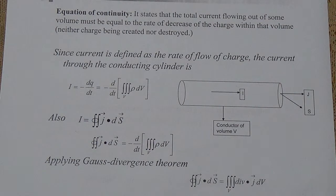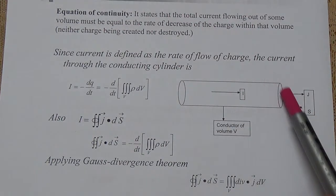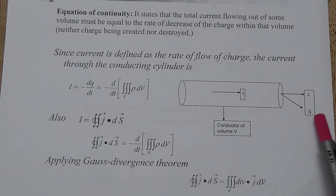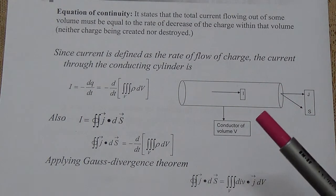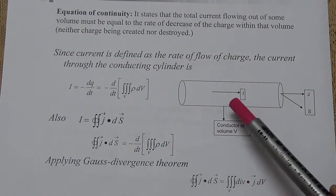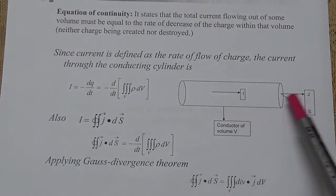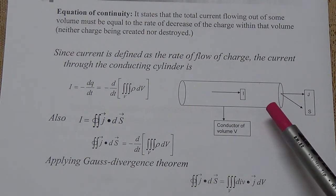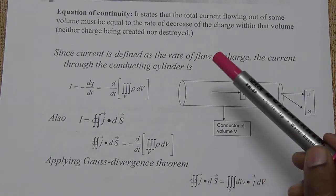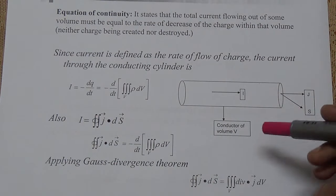The next topic is the equation of continuity, which states that the total current flowing out of some volume must be equal to the rate of decrease of the charge within that volume. We have considered a cylinder for that purpose, in which current I is flowing, J is the current density, and S is the surface area of the wire. Since neither charge is created nor destroyed, this equation of continuity defines the charge conservation theorem.